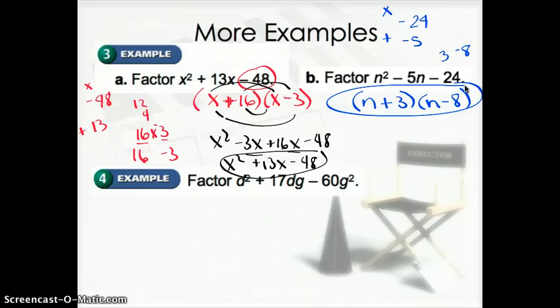And then this last one. It's not really worse than the other one, so don't get too scared. But it looks worse because it has two variables. So this time we're going to factor d squared plus 17dg minus 60g squared. I'm still going to encourage you to just look at the numbers first. You're trying to think of two things that multiply to get you negative 60 and add to get you 17. The first thing I usually think of is 12 and 5 because that's times 60. And 12 and 5 add up to 17.